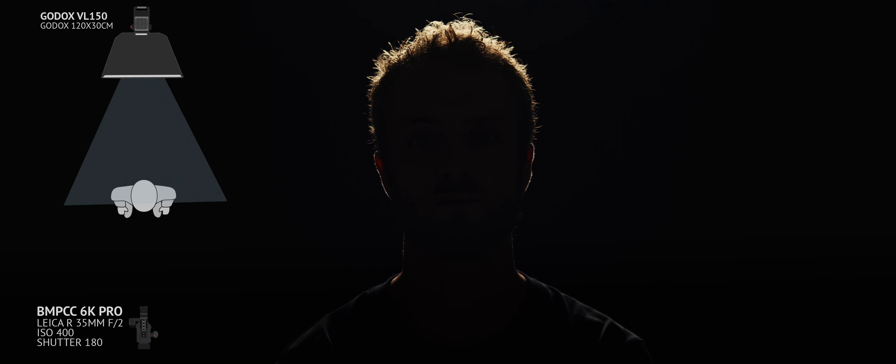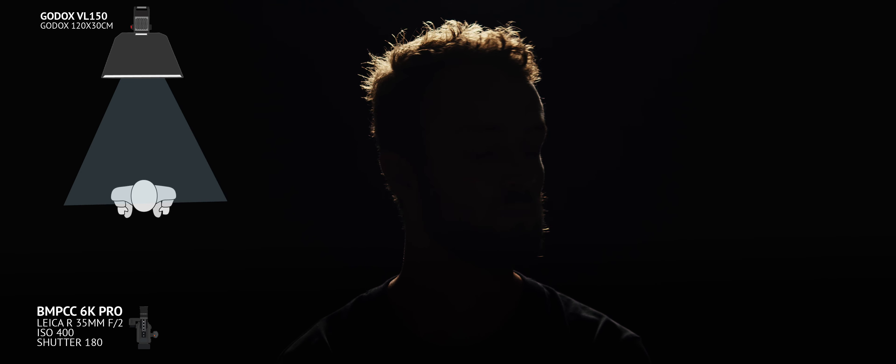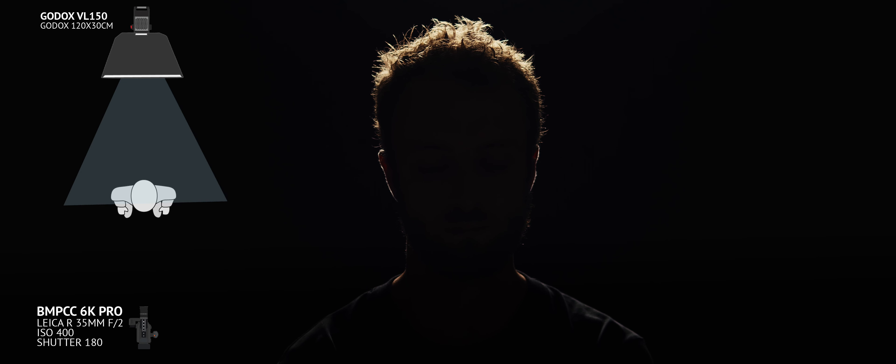Next up we've got back lighting. Back lighting is not really used on its own — it's mostly used to separate the talent or actor from the background because it creates a little halo effect around the shoulders and hair. It's also nice whenever you're interviewing somebody who wants to stay anonymous, as it creates a silhouette. This example uses a softbox, but you can also use a fresnel or a reflector, which creates more of a hard edge around the actor.